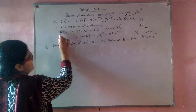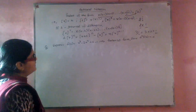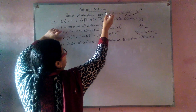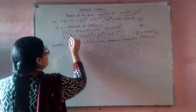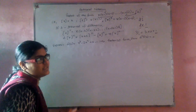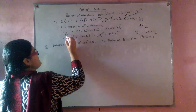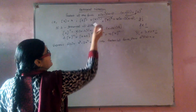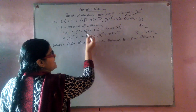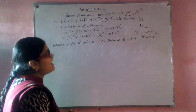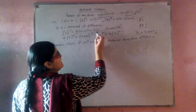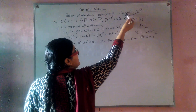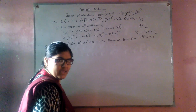Now let us take an interval of difference as h. Here we previously took the difference as 1, whereas now we are taking a general constant term as h. That means x raised to power r becomes x(x minus h)(x minus 2h) and so on, up to x minus (r minus 1)h.